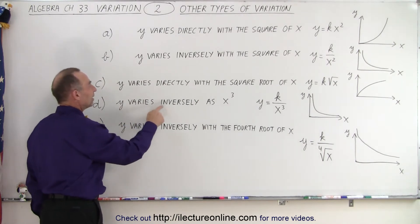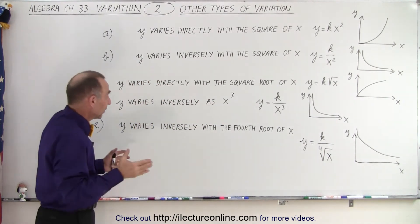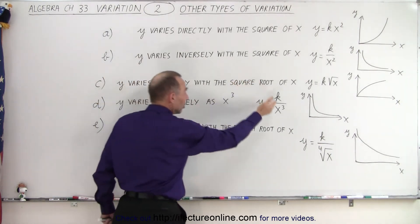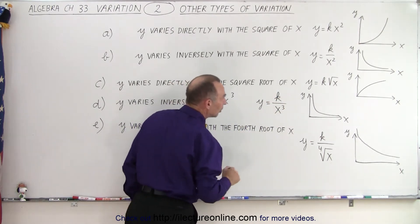Here we have Y varies inversely as X cubed. So here we say it a little bit differently. But again, inversely means that it goes in the denominator as X is cubed. So we have K over X cubed.